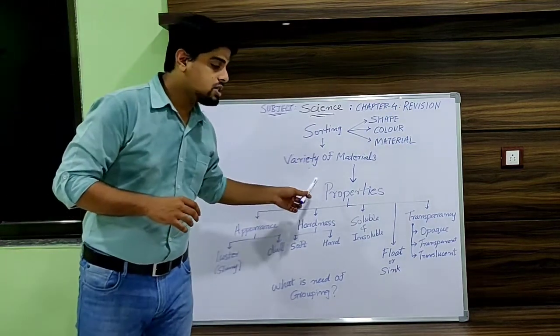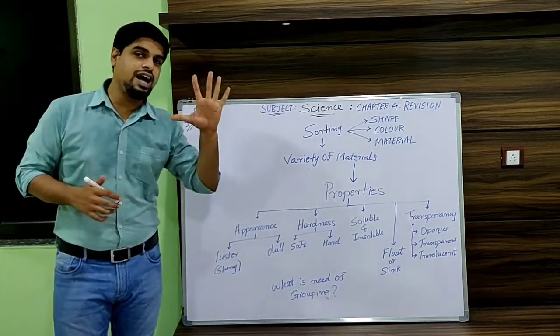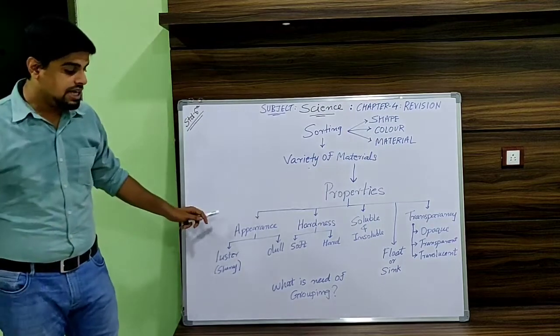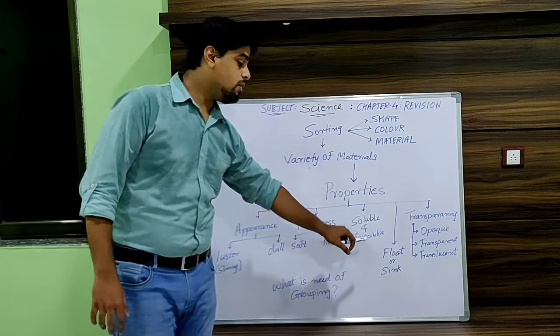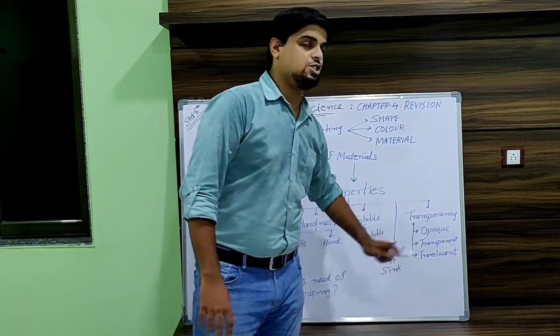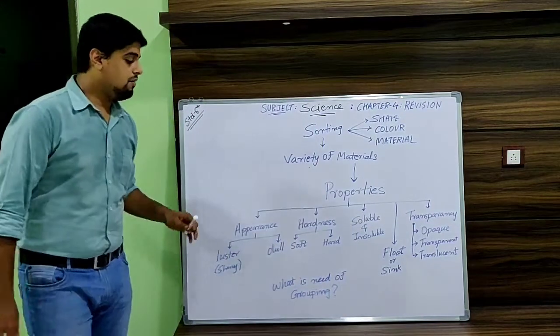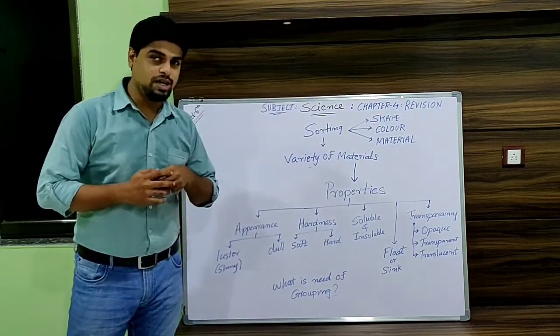And for grouping or sorting this material we need to understand its properties. So we have discussed mainly five properties: appearance, hardness, soluble and insoluble, floating or sink, and finally transparency. We have discussed each and every property in detail in our explanation video.